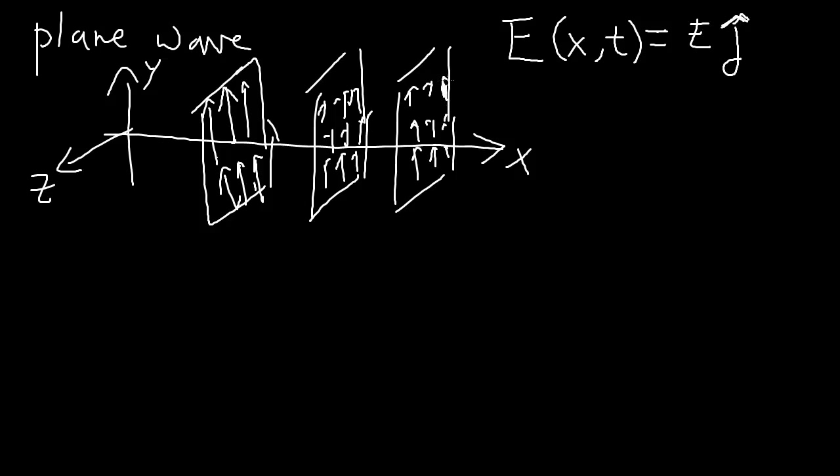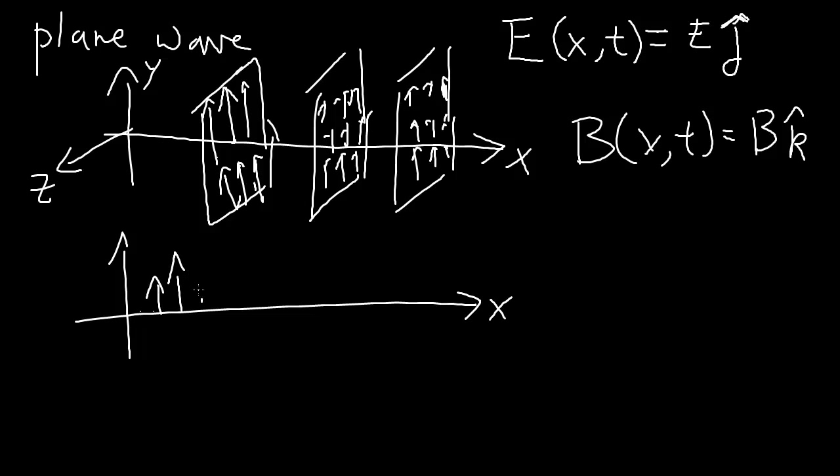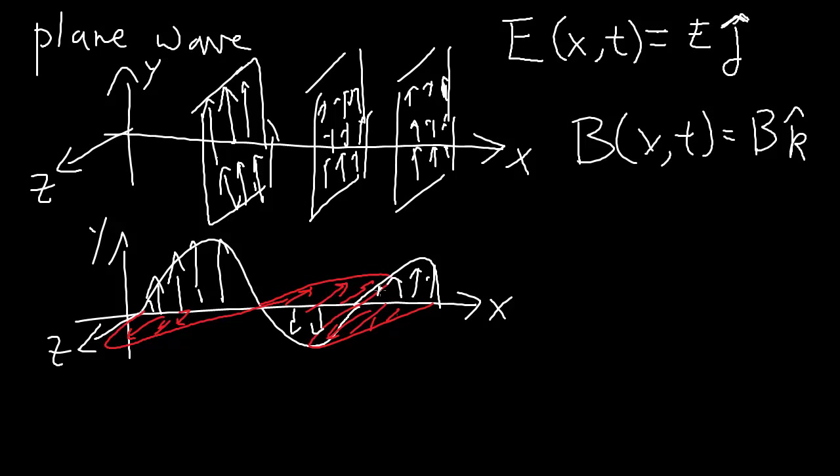Within each plane they all have the same electric field. Now further, we make the assumption that the magnetic field is doing the same thing, except that the magnetic field only acts in the z direction. I'm sketching out the description of the transverse plane wave. Let's see how this setting creates our wave equation.